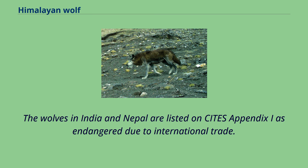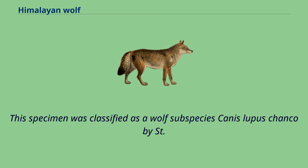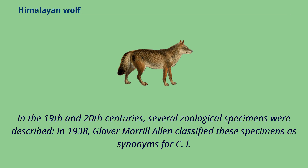Canis chanco was the scientific name proposed by John Edward Gray in 1863, who described a skin of a wolf that was shot in Chinese Tartary. This specimen was classified as a wolf subspecies Canis lupus chanco by St. George Jackson Mivart in 1880. In the 19th and 20th centuries, several zoological specimens were described. In 1938, Glover Morrill Allen classified these specimens as synonyms for Canis lupus chanco.